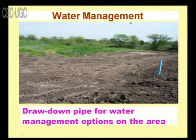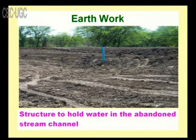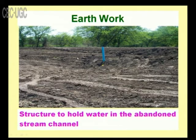For water management, draw-down pipes are constructed and used to spread water into the selected area. We also need a structure to hold water in the abandoned stream channel — because when we are watering an area, we must place some structure so the land can hold that water.